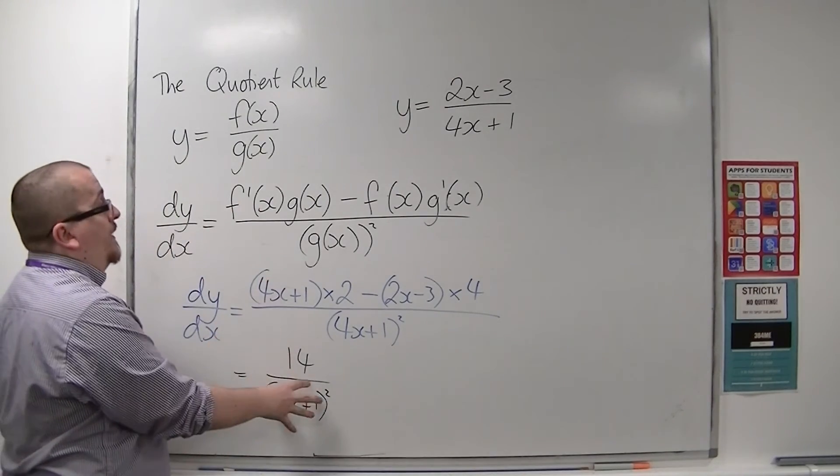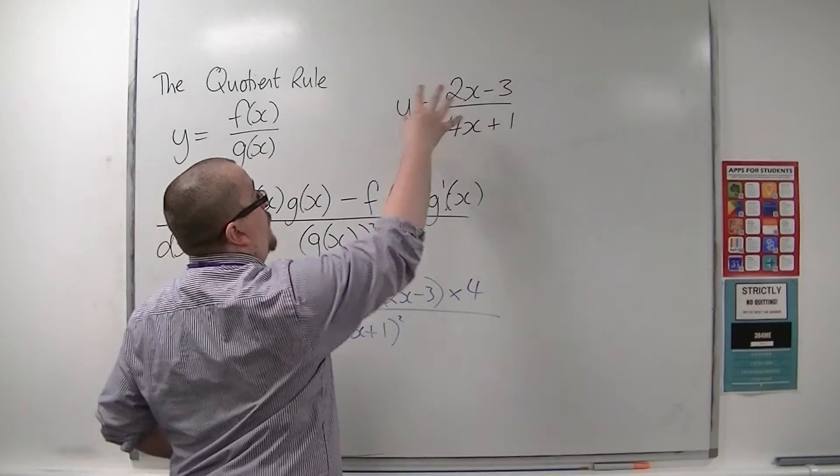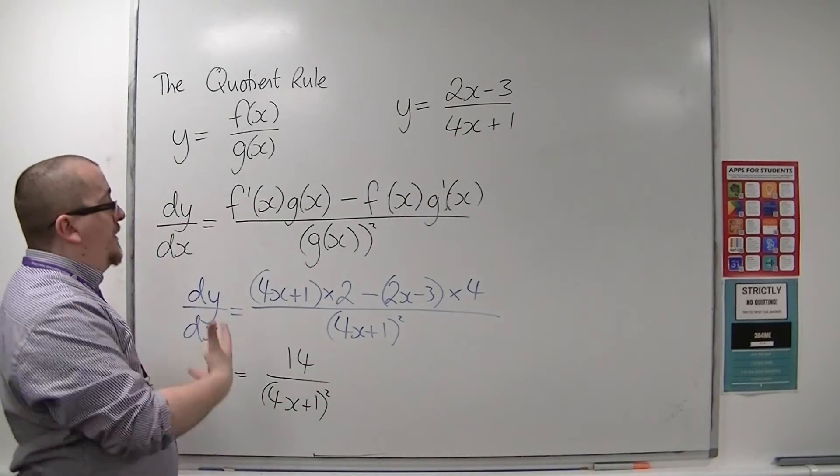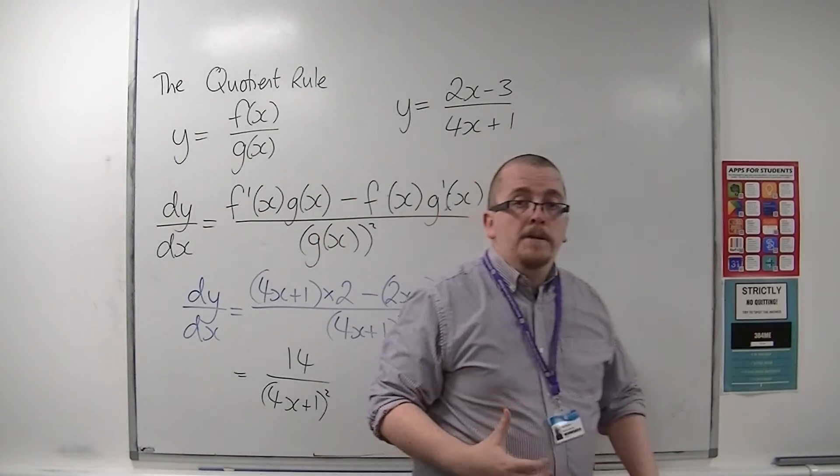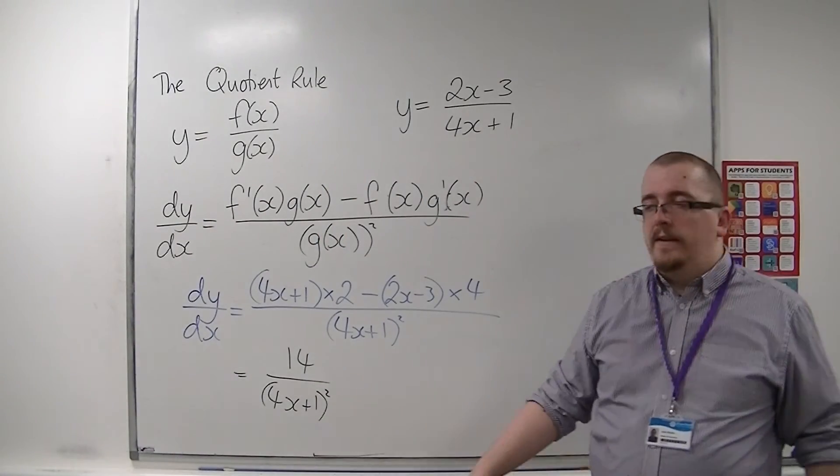And that is the derivative of 2x minus 3 over 4x plus 1. So that's how the quotient rule works, and we'll be seeing more examples of that in the coming videos.